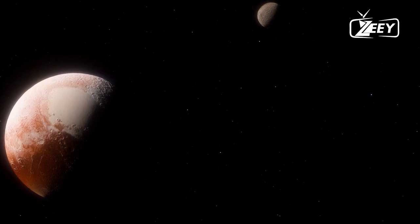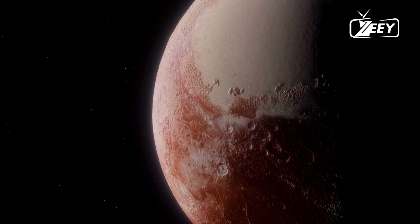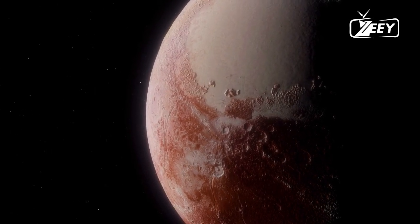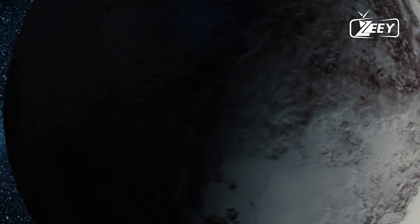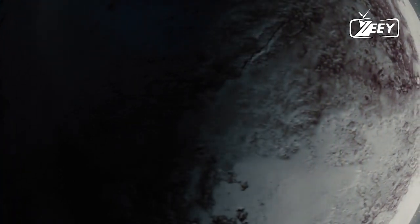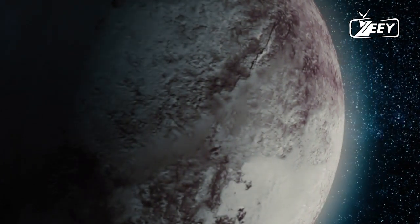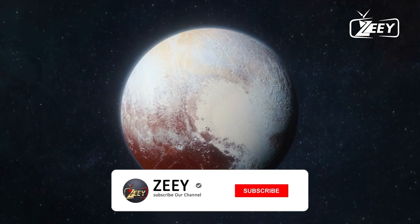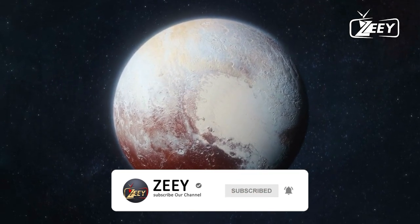Lowell made a rough estimate of where this planet could be in 1915, but sadly he did not live long enough to see it discovered. Pluto was finally found in 1930 by Clyde Tombaugh at the Lowell Observatory, and its name came from an 11-year-old girl in England named Venetia Burney. She suggested the name Pluto after the Roman god of the underworld.